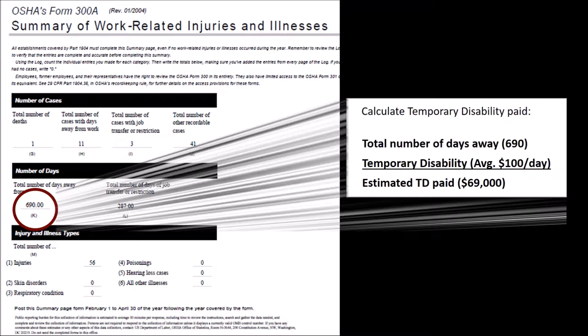Now, for many small employers, this would have a major impact on their XMOD and workers' compensation premiums. In the prior slide's example, the employer had saved 183 days away from work, which calculates to an estimated $18,000 in temporary disability saved. A side note here is that your XMOD is a rolling three years, so that is actually $18,000 saved per year for three years, which is an estimated $54,000 savings.